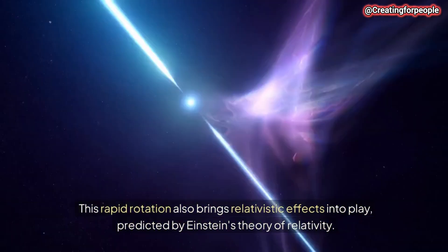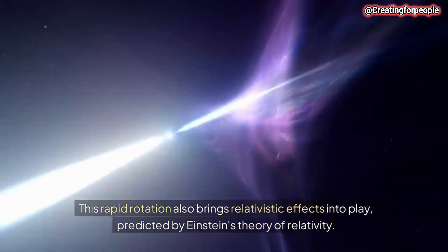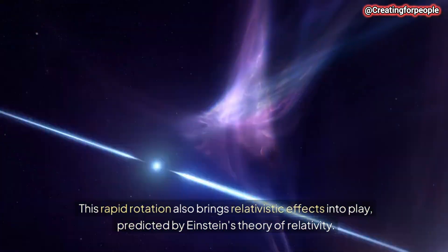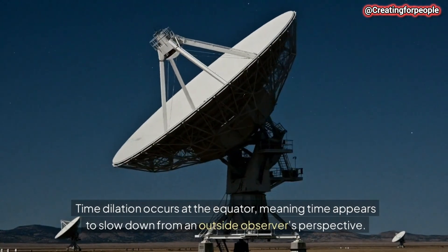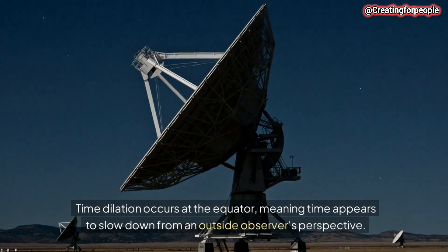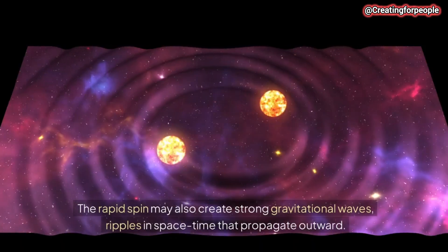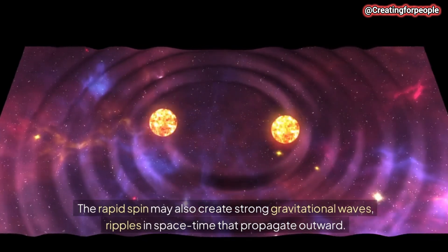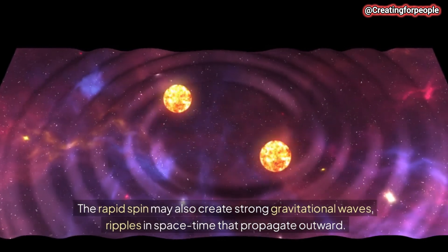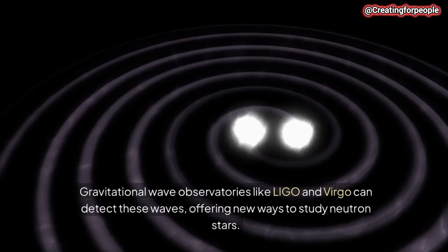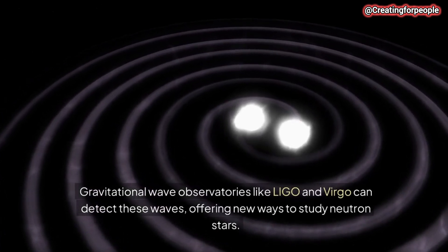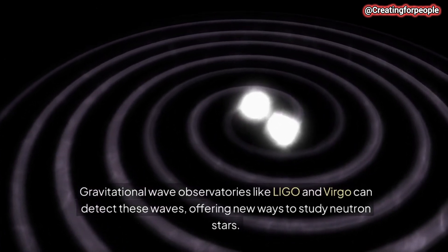This rapid rotation also brings relativistic effects into play, predicted by Einstein's theory of relativity. Time dilation occurs at the equator, meaning time appears to slow down from an outside observer's perspective. The rapid spin may also create strong gravitational waves, ripples in space-time that propagate outward. Gravitational wave observatories like LIGO and Virgo can detect these waves, offering new ways to study neutron stars.